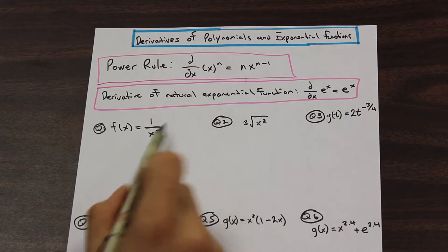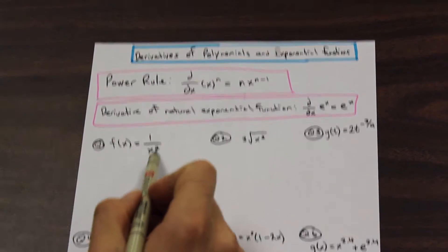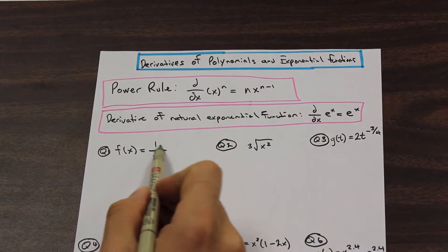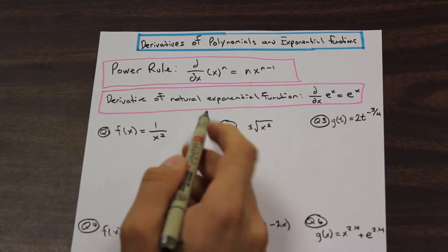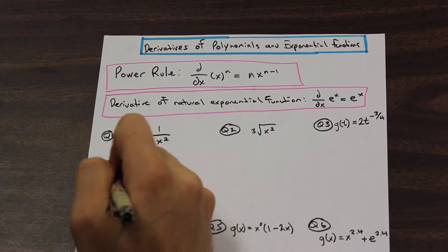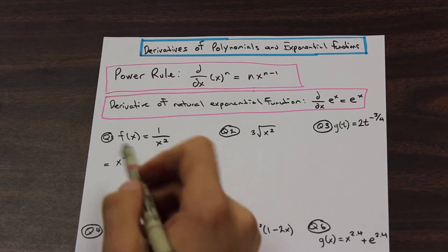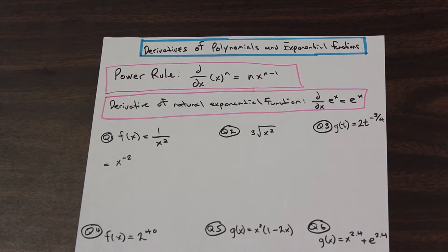So the first one we have f of x is equal to 1 over x squared. So whenever we have a function like this where the x is on the bottom by itself, we're just going to go ahead and we're going to move that to the top of the function by making the exponent here 2 to the negative. So we're going to rewrite that as x to the negative 2. And now we're in a prime position here to apply our power rule. So let's go ahead and do that.